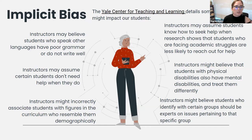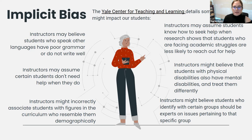Instructors who believe students speaking other languages have poor grammar and don't write well. Instructors may assume that students don't need help when they do. Instructors might incorrectly associate students with figures in the curriculum who resemble them demographically. Instructors may assume students know how to seek help, when research shows that students facing academic struggles are less likely to reach out. Instructors might believe students with physical disabilities also have mental disabilities. And instructors might believe students who identify with certain groups should be experts on issues pertaining to that group and represent the entire group for the whole class.